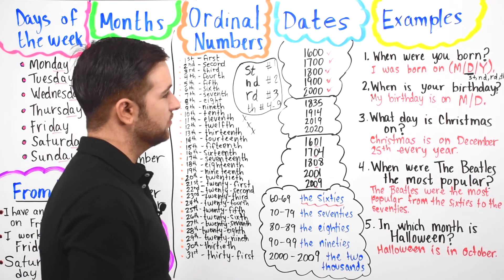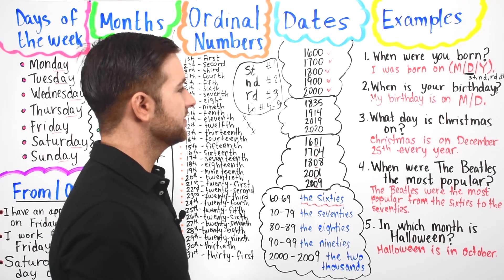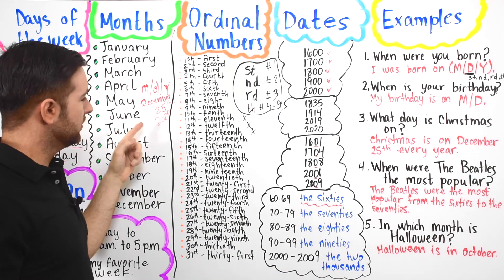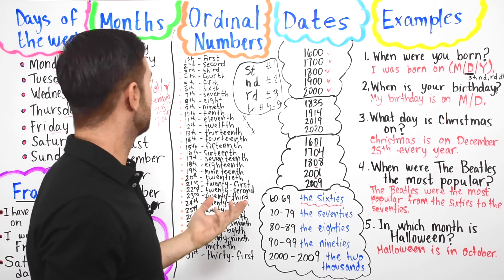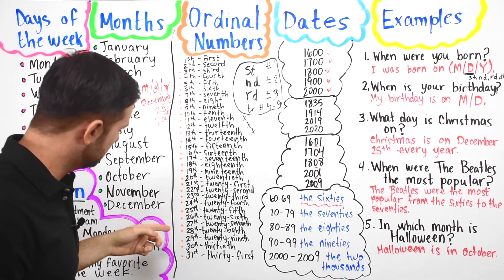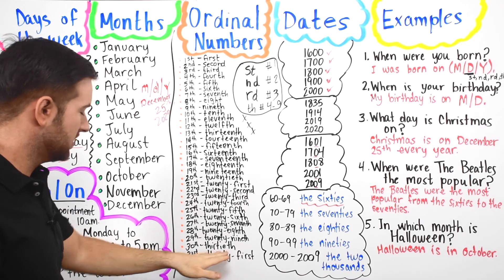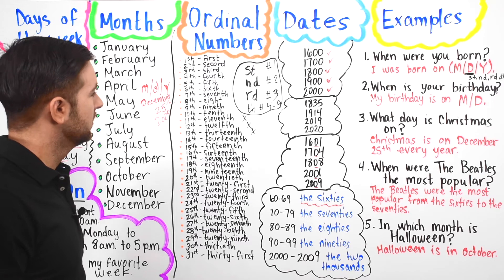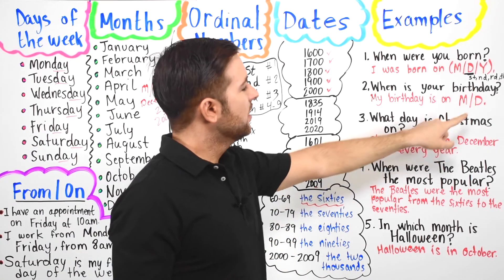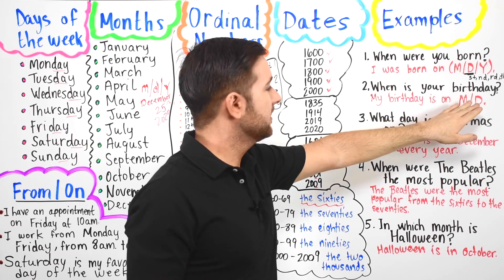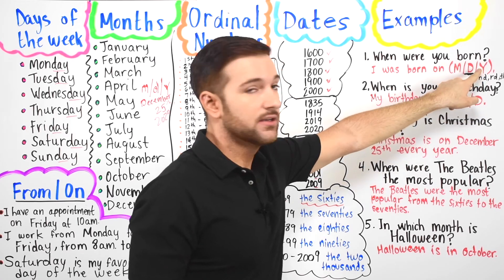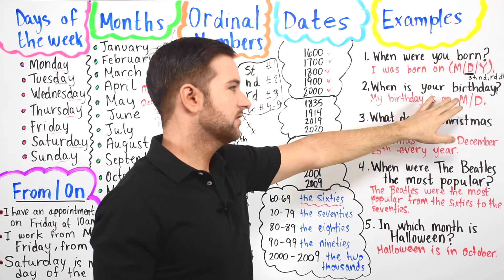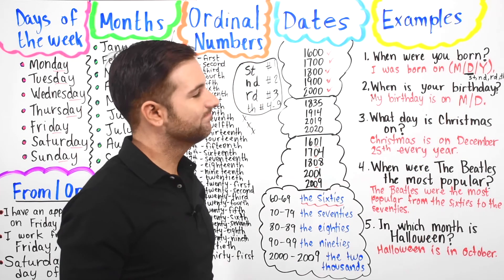Number two: When is your birthday? My birthday is on month and day — for example, my birthday is on June 12th, or my birthday is on November 30th. Notice that when talking about a birthday, you don't need to include the year unless you want to be very specific.